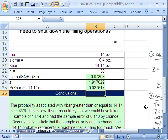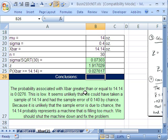That's pretty small. The probability associated with x-bar greater than or equal to 14.14 is 0.0276. This is pretty low. It seems unlikely that we could have taken a sample of 14.14 and have the sampling error by chance. Because it is unlikely that the sampling error is due to chance, the 14.14 probably represents a machine that is filling too much. We should probably shut the machine down and fix the problem. Do you think this kind of thing is done every day in manufacturing companies all over the world? You betcha. Statistics at work, everyday kind of example.